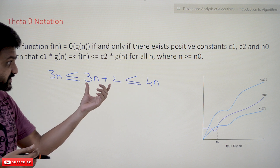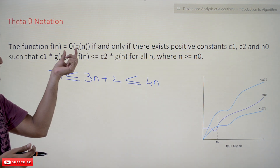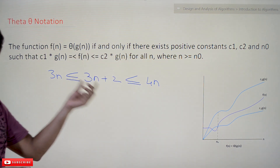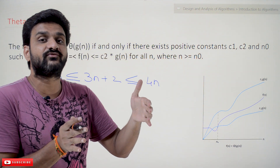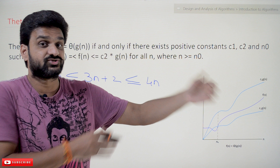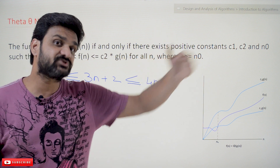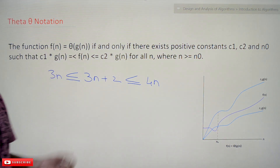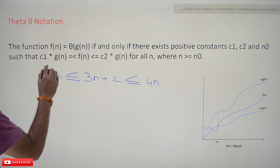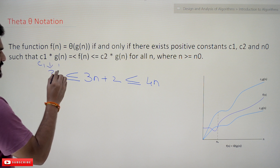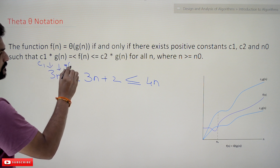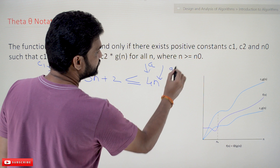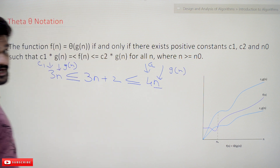So this f of n can be expressed as theta of g of n if it exists in between 4n and 3n. If this happens to be true for all values of n greater than n0, then we can say that f of n can be represented as theta of g of n. Here, c1 is 3, c2 is 4, and g of n is n.